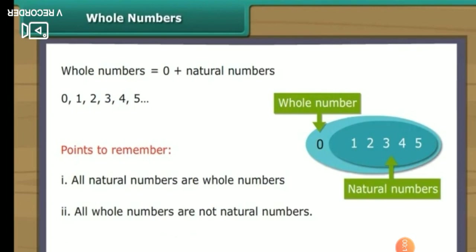Whole numbers — the natural numbers including zero are called whole numbers. Whole numbers are denoted by the capital letter W.